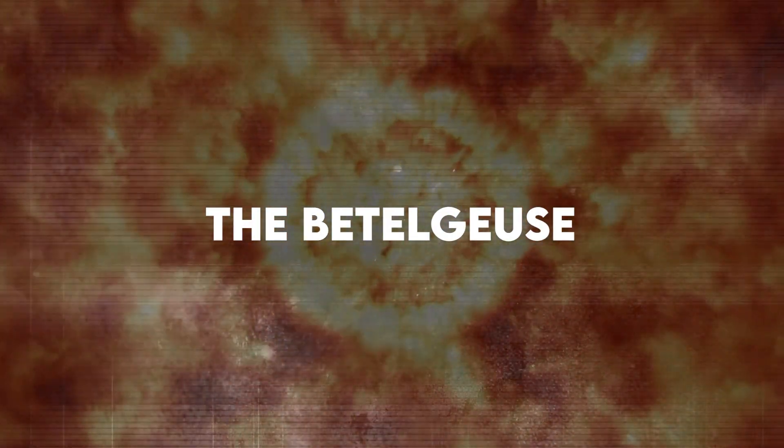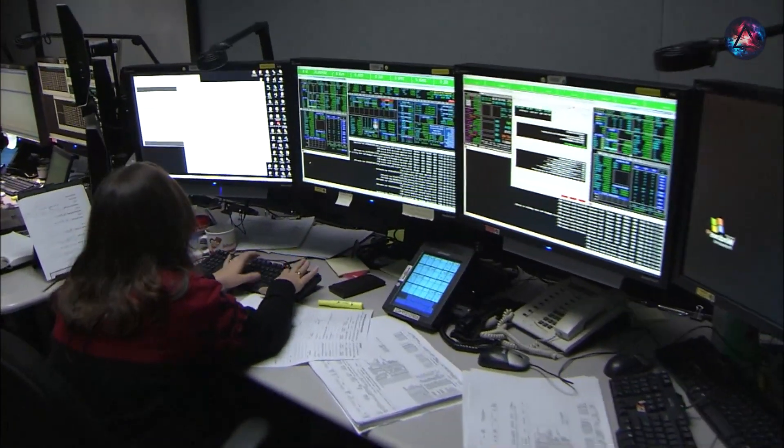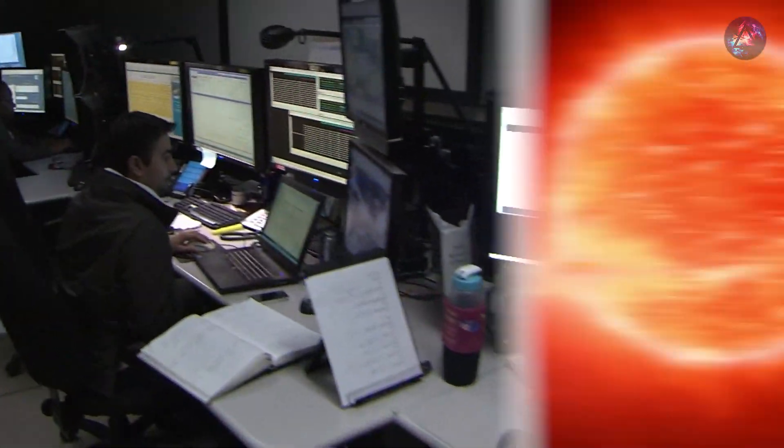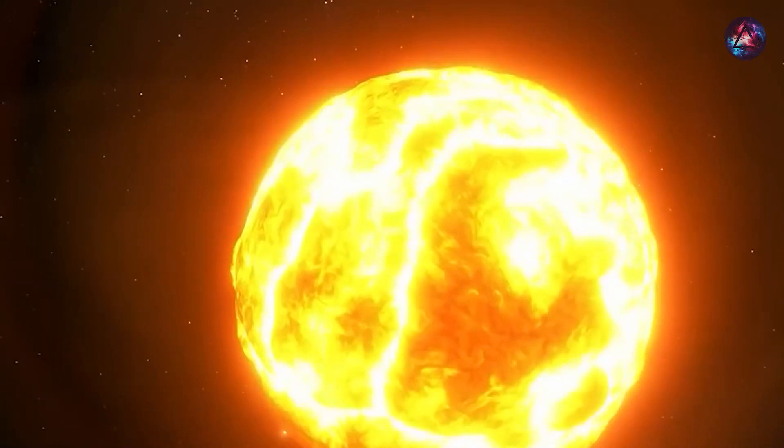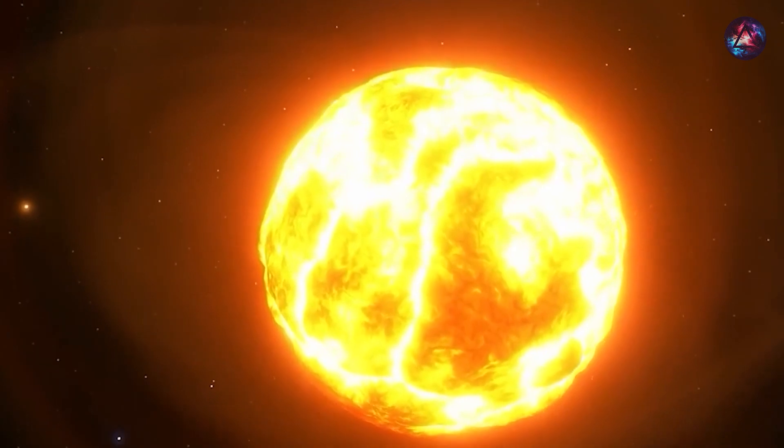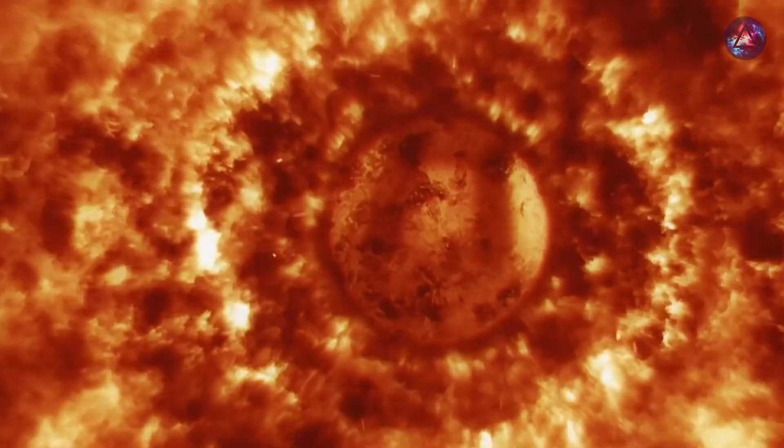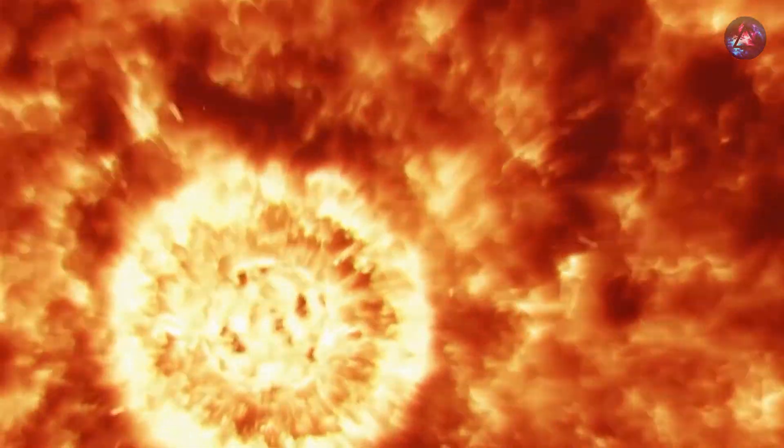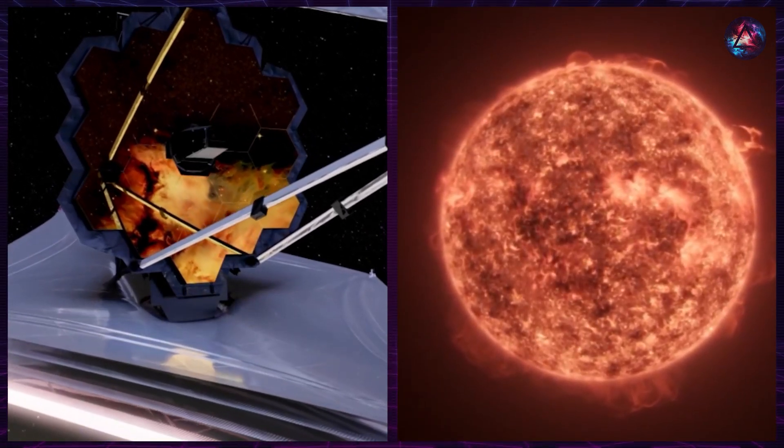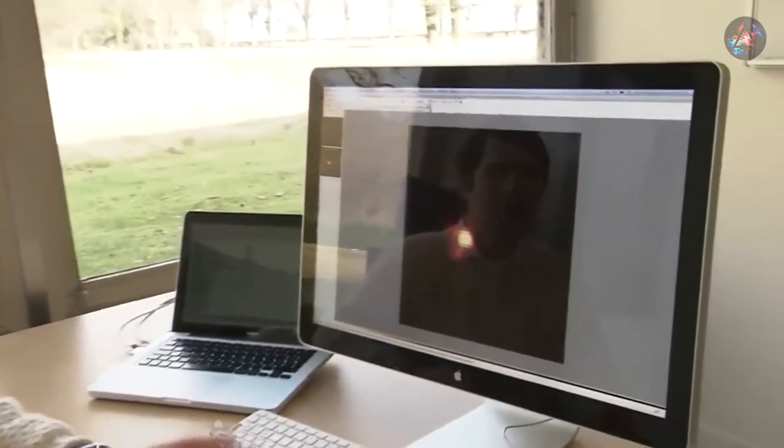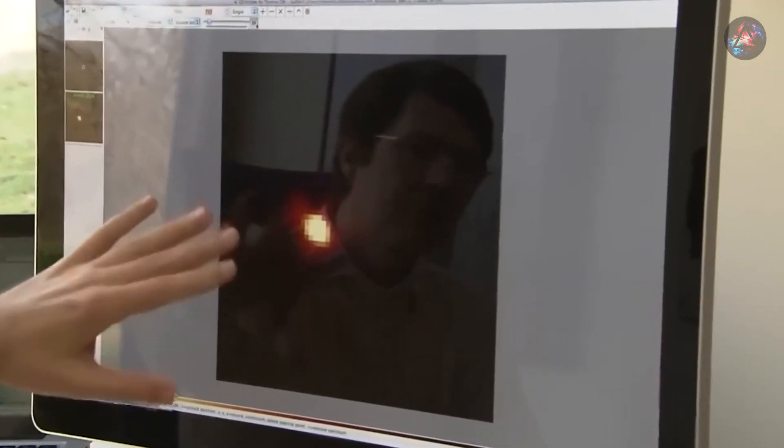Astronomers closely observing the night sky have been particularly intrigued by Betelgeuse, a star that has garnered attention due to its unusual behavior. It gets so hot there, the temperature almost becomes meaningless. We're talking about a billion degrees in the center of one of these stars. When scientists directed the James Webb Space Telescope towards Betelgeuse, they made a noteworthy discovery that has sparked concern within the scientific community.